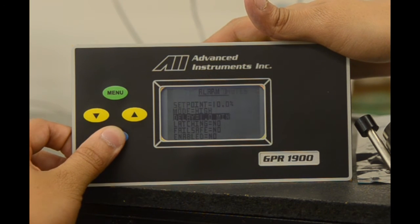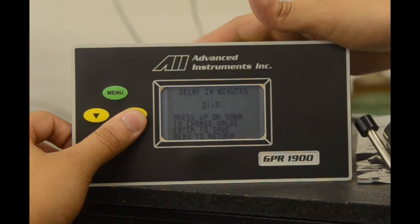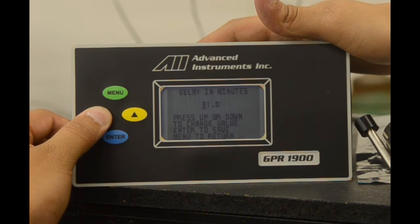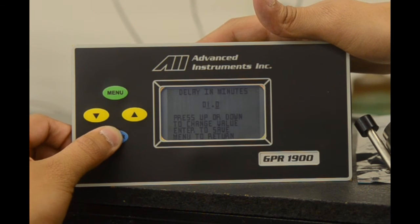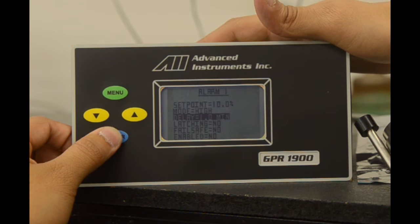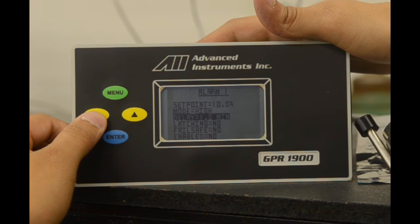We also have a delay function currently set at one minute. We select enter to change that value. The delay allows the analyzer to be under a certain alarm condition for the amount of minutes configured by the user before alarming. This is ideal to prevent false positives.